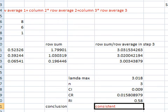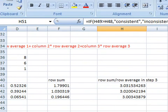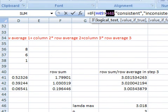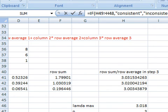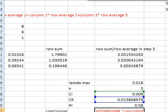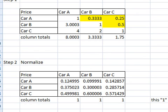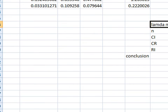If CR is less than 0.1, then our judgment is consistent. If not, then our judgment is inconsistent, and all we need to do is go back and revise our pairwise comparison matrix. This same procedure should be performed for price, for miles per gallon, and then for style also.